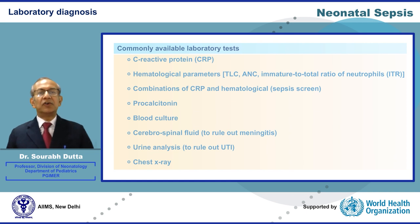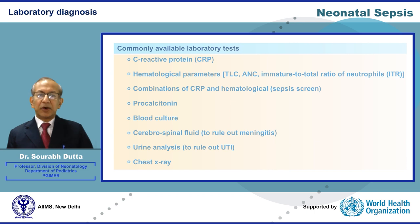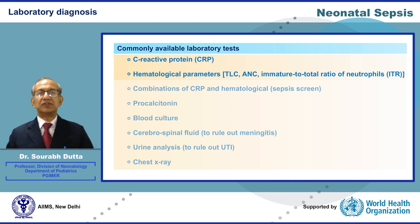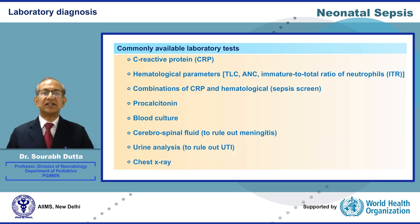Laboratory tests must be performed when there is diagnostic uncertainty. The commonly available laboratory tests are CRP, hematological parameters such as total leukocyte count, absolute neutrophil count, and immature to total ratio of neutrophils, procalcitonin, blood culture, cerebrospinal fluid analysis, urine analysis, and chest X-ray.